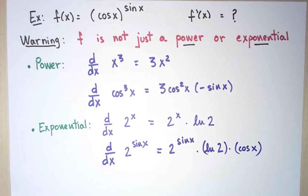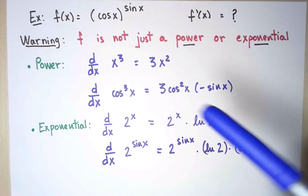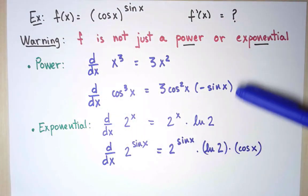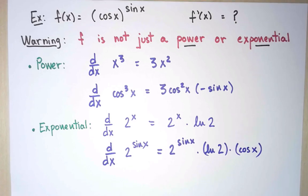The problem with my original function is that it isn't any one of those. Neither the base nor the exponent is a constant. They both depend on x. So none of these rules by itself tells me what to do. I'm going to present two methods to take care of this, which are actually the same method in disguise.